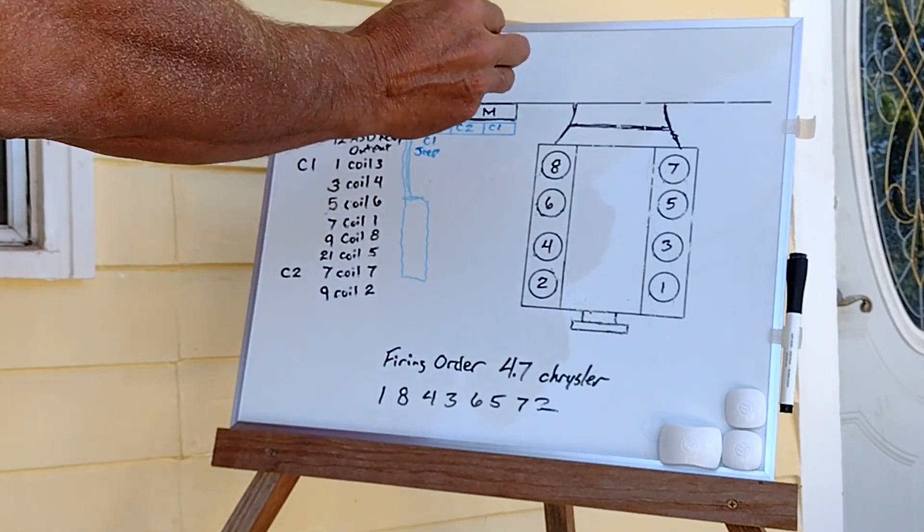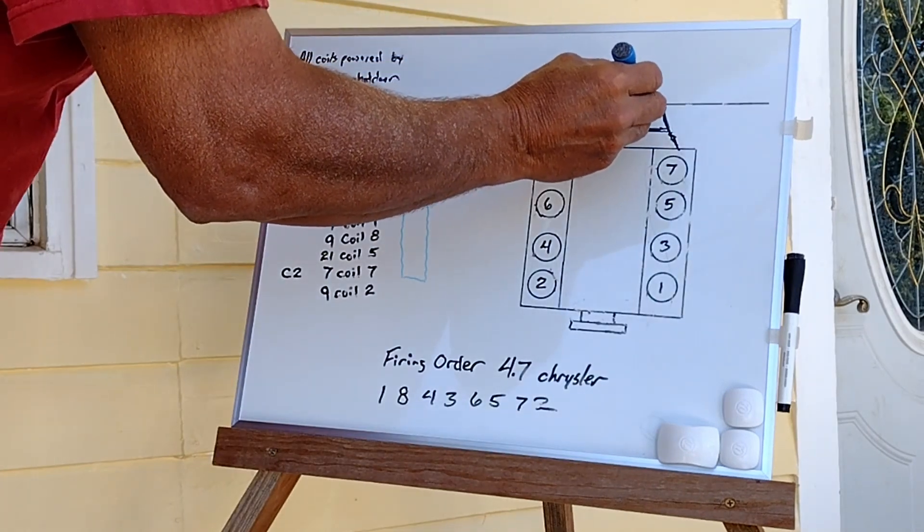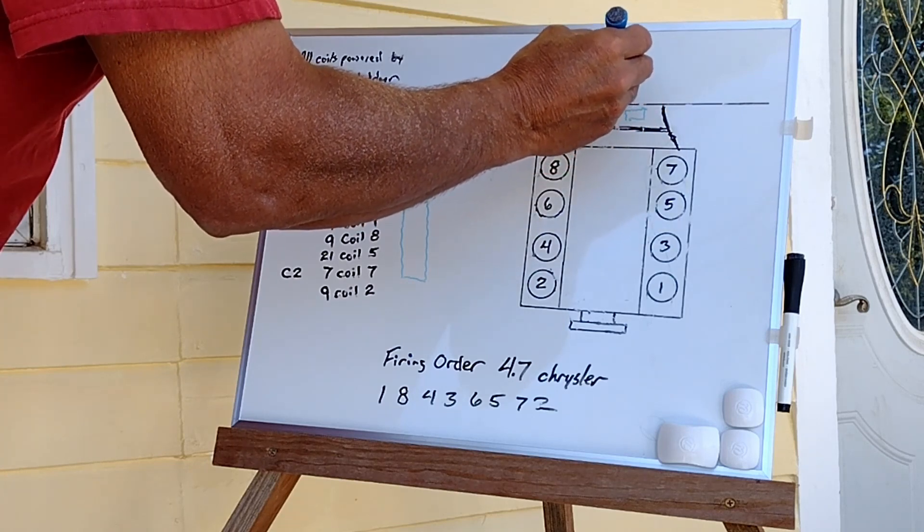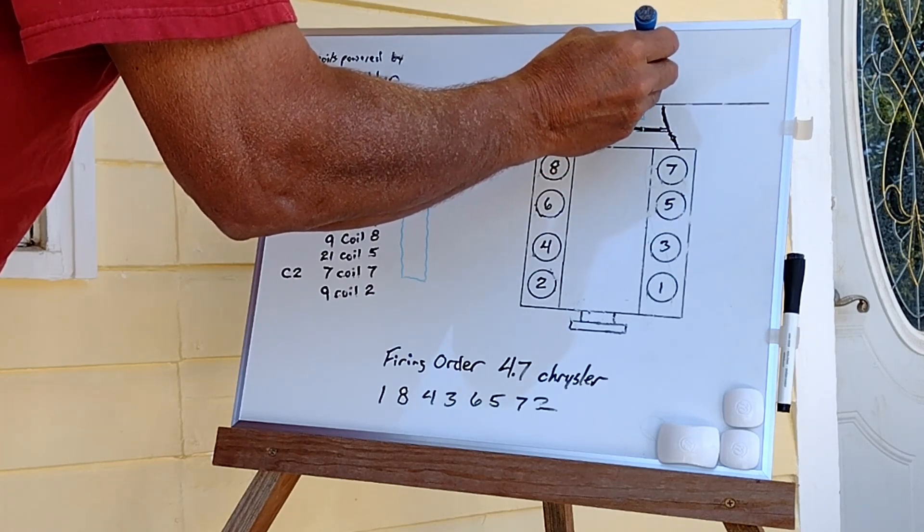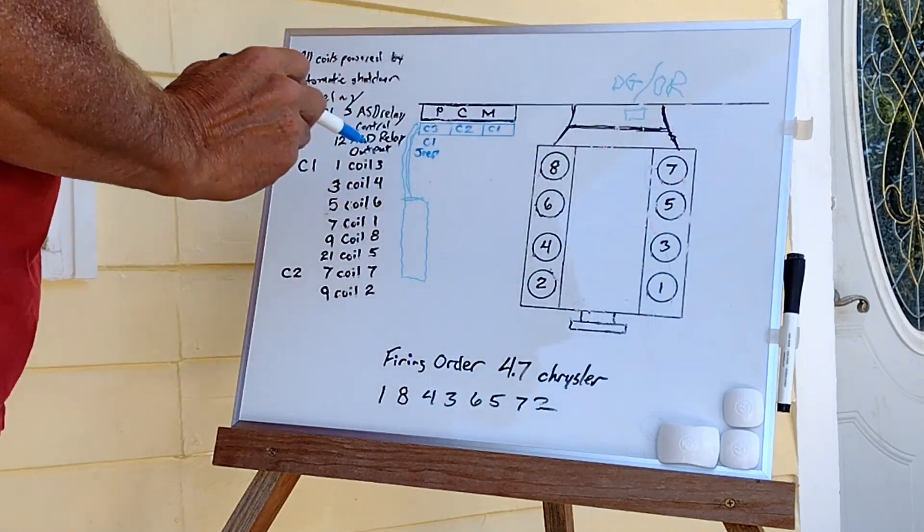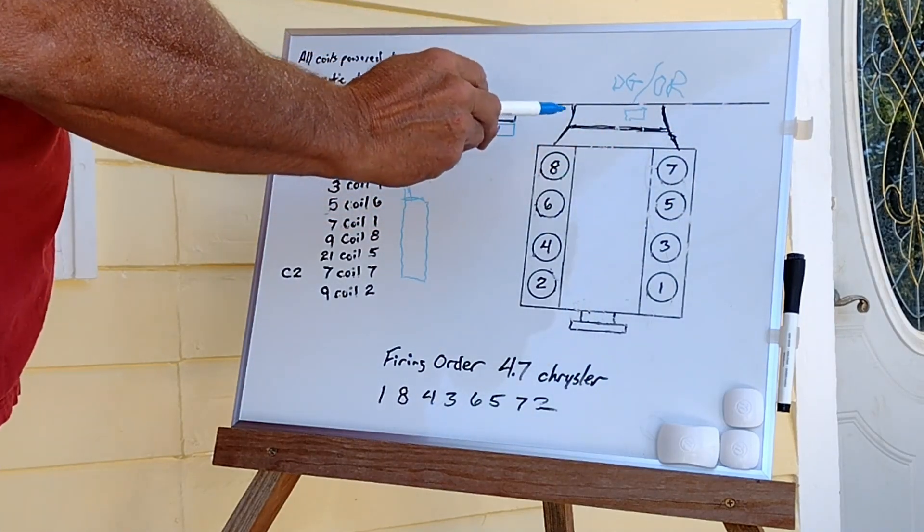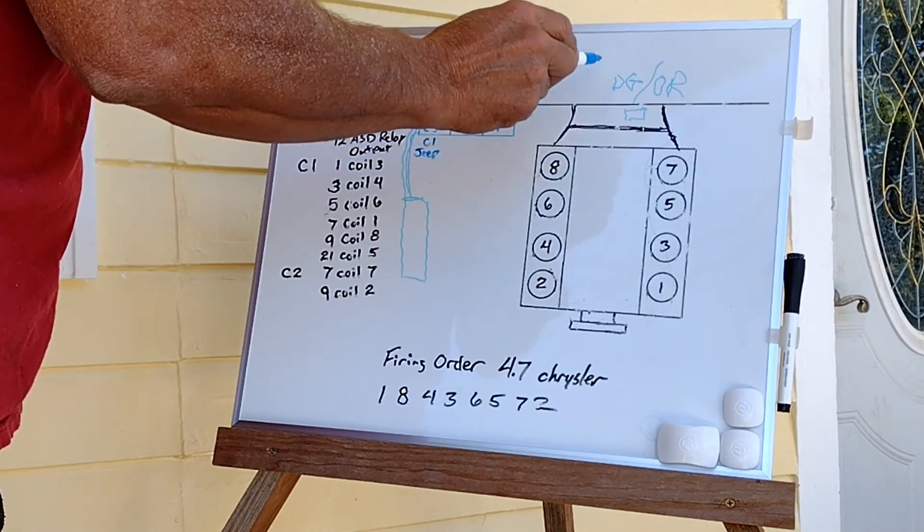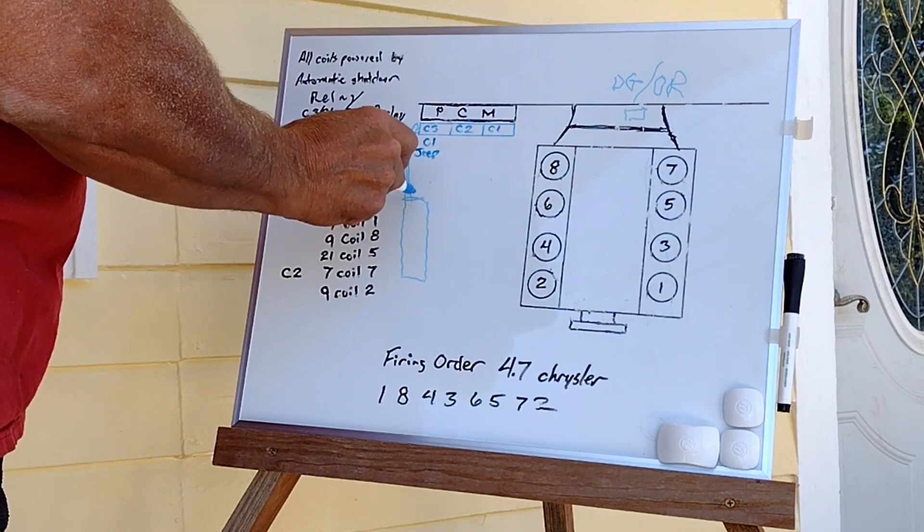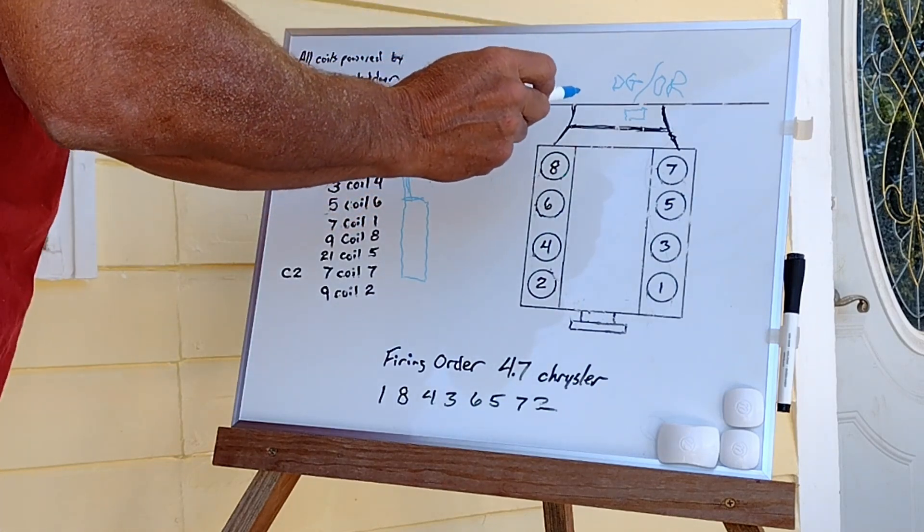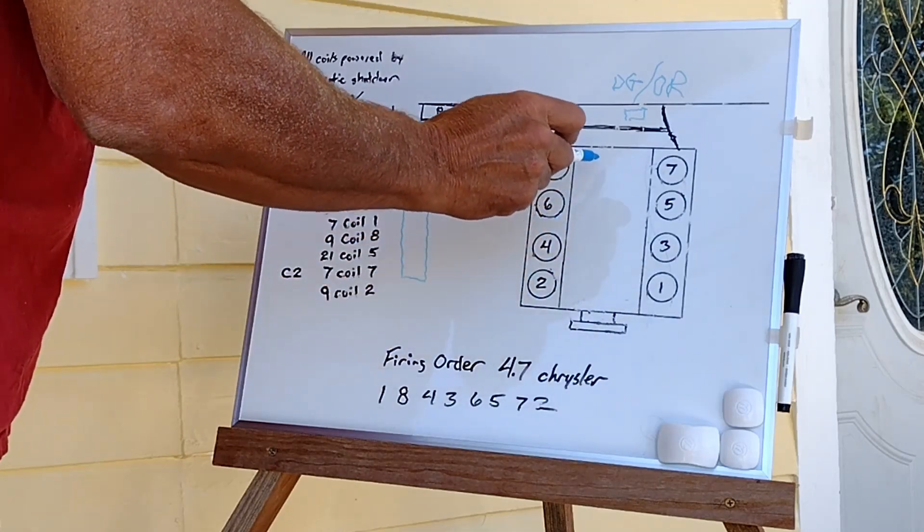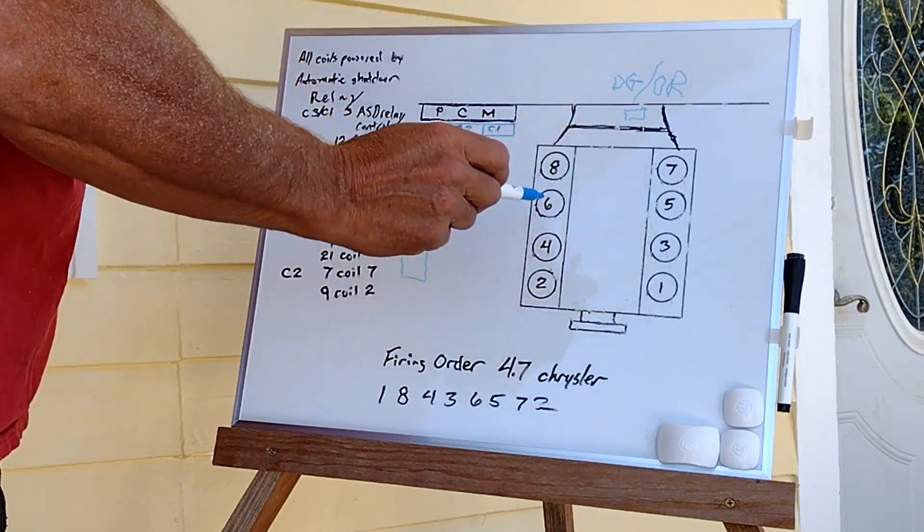As I've showed you in the video, here at the back of the engine you're going to have a Thomas and Betts connector that's going to contain your dark green, orange. That dark green and orange is going to be your power, your switched battery positive through a fuse block in the power distribution block that is going to power all of your coils and all of your injectors.